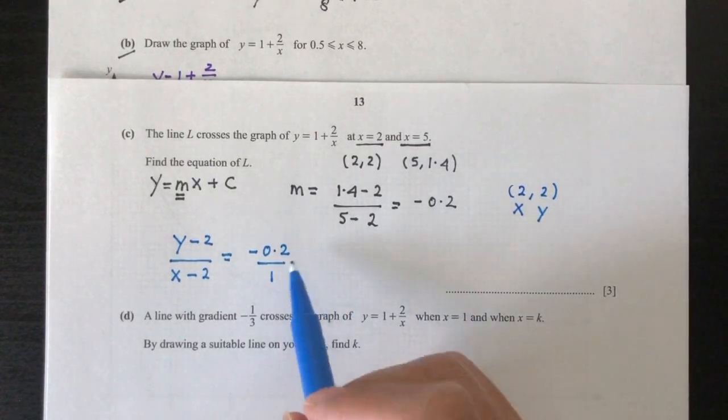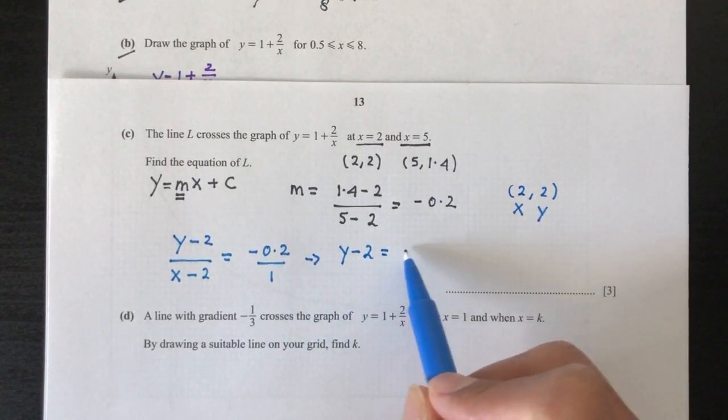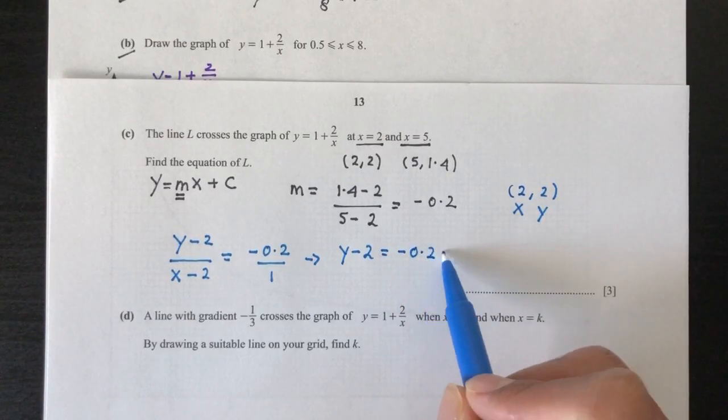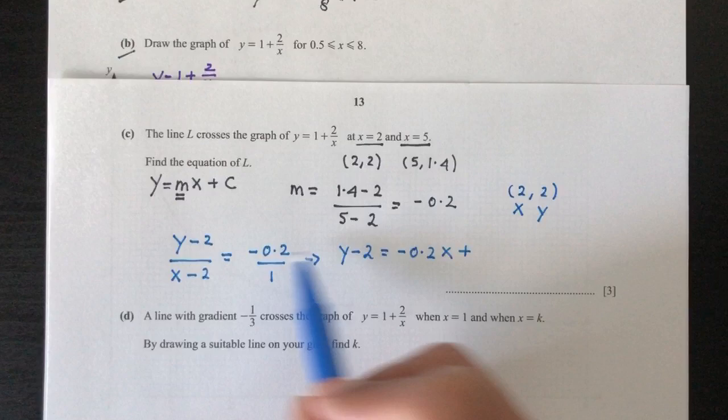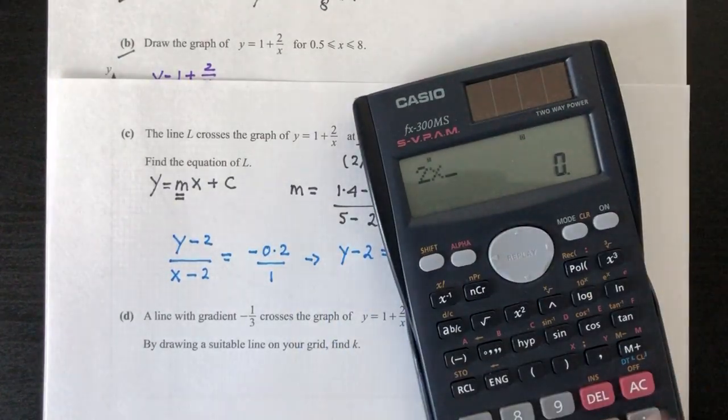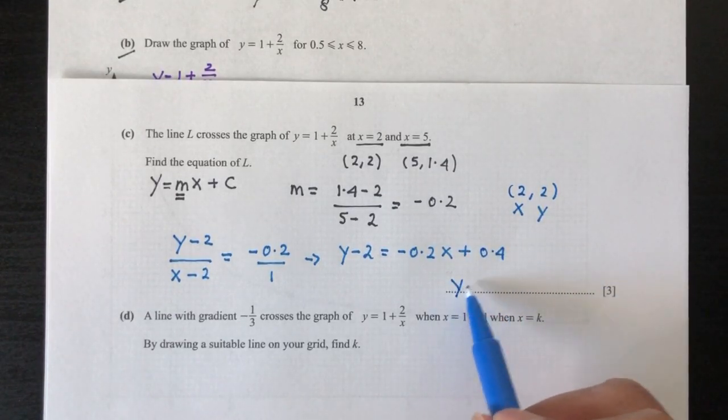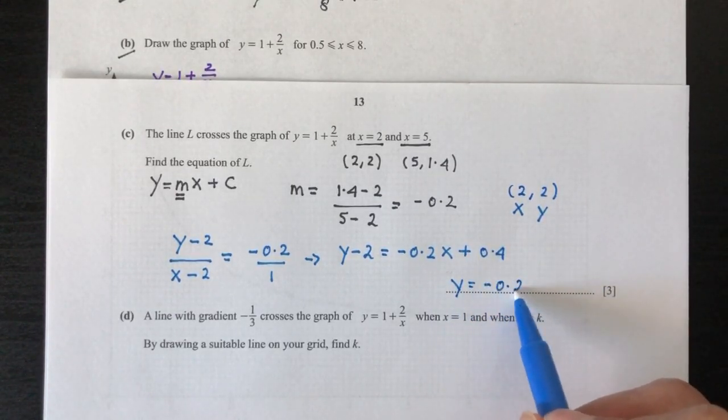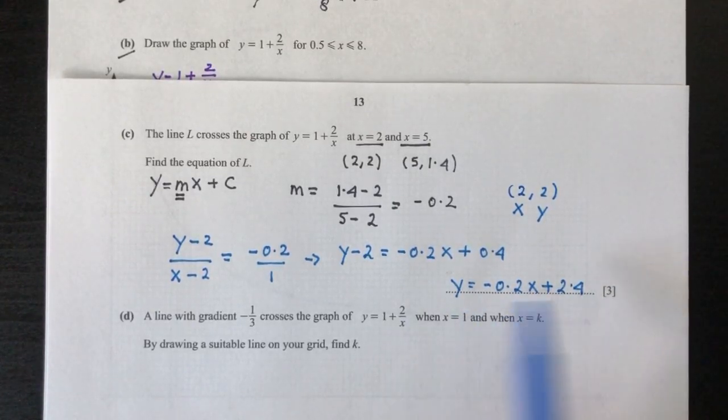Next up, we have to cross multiply. You will have y - 2 = -0.2x + 0.4. So y = -0.2x + 2.4. And that will be your equation of your line L.